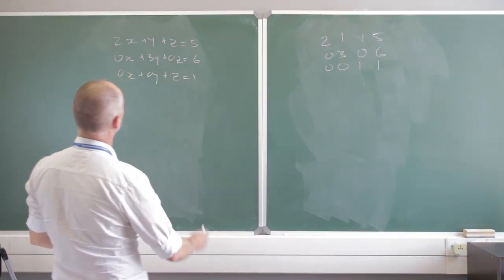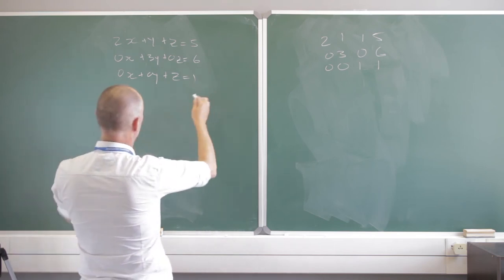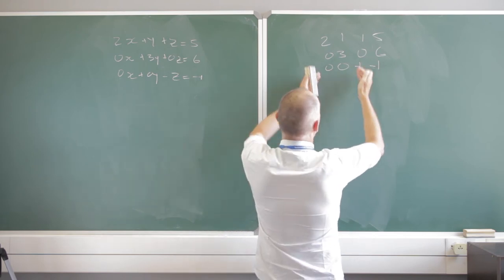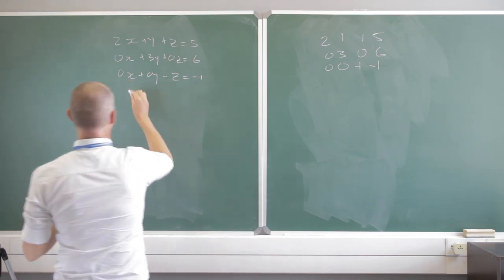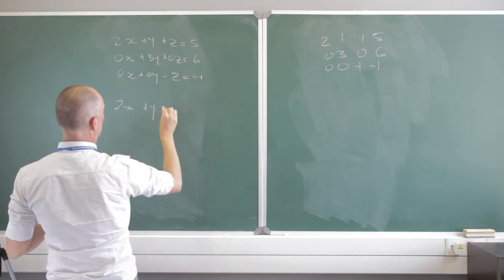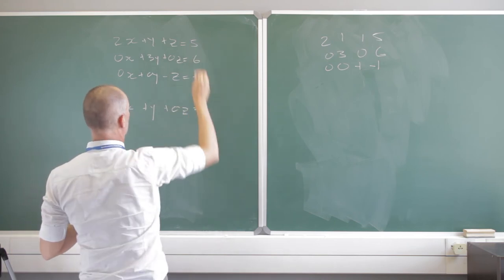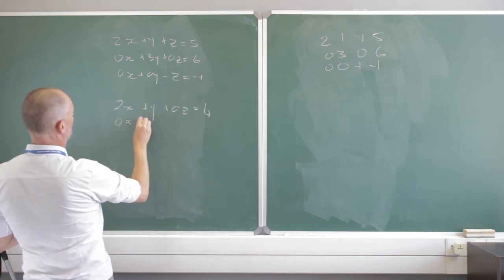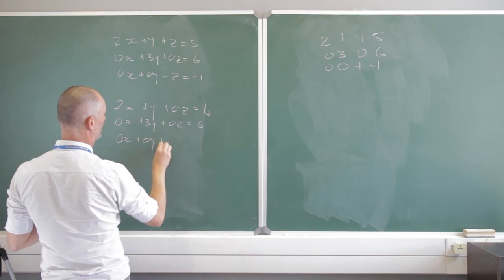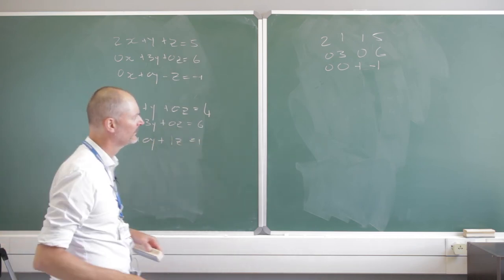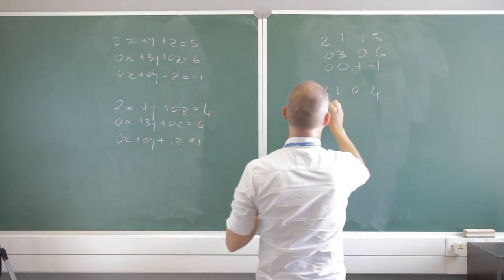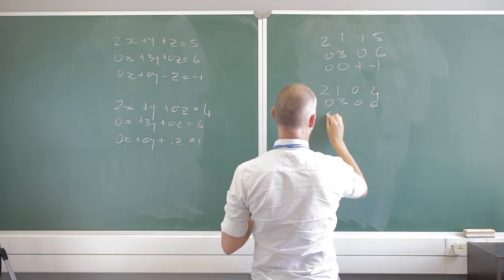The board is cleaned. Now what I can do is multiply the bottom row throughout by negative 1, giving a negative z and negative 1. Adding that to the first row: 0x plus 2x, 0y plus y, minus z plus positive z gives 0z, and negative 1 plus 5 equals 4. So the first row becomes 2x plus y equals 4. The second row is still 0x plus 3y plus 0z equals 6. And the third is still z equals 1. In matrix form: 2, 1, 0, 4; then 0, 3, 0, 6; then 0, 0, 1, 1.